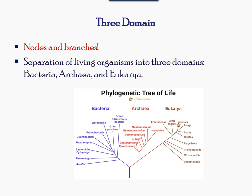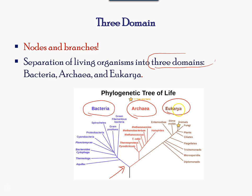In the evolution of life on Earth, a diagram shown in this image represents three different branches from a single point. Notice there are three main colors representing each group of organisms. From a single point, there are three main domains: archaea, bacteria, and eukarya. The various branches and nodes help you understand the relationship at an evolutionary level.